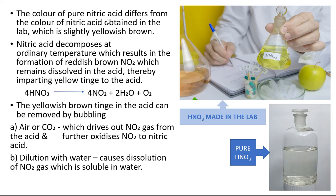The color of pure nitric acid differs from nitric acid obtained in the lab. When prepared in the lab, it is slightly yellowish brown in color. The reason is nitric acid is not very stable — it easily decomposes even at ordinary temperature, resulting in the formation of nitrogen dioxide, a reddish brown gas, which remains dissolved in the acid imparting a yellow tinge.